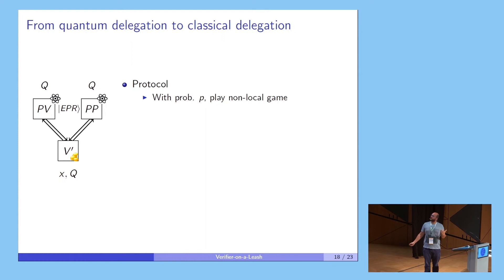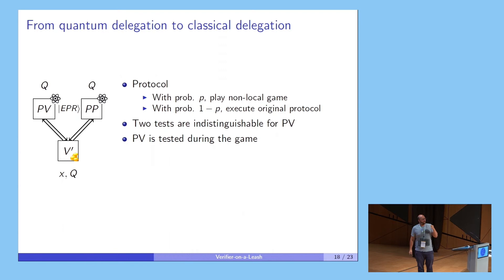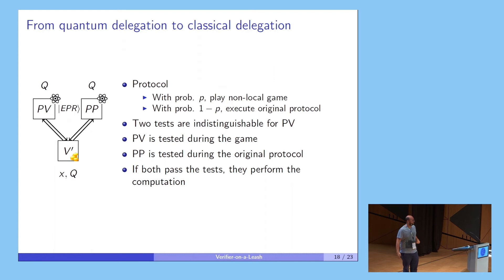Then what our protocol is? With some probability, the verifier makes the two provers play our non-local game, this new non-local game. And with probability 1 minus p, the verifier makes the prover simulate Broadbent's protocol. The idea is that from the perspective of PV, he cannot distinguish which of these two tests are being done. In this case, when you're doing the non-local game, we can somehow bootstrap the strategy and say that the PV is being honest. And once you know that PV is honest, then you can test PP, and if PP is also honest by the second test, then we know that they are performing the correct computation when V prime decides to do it.